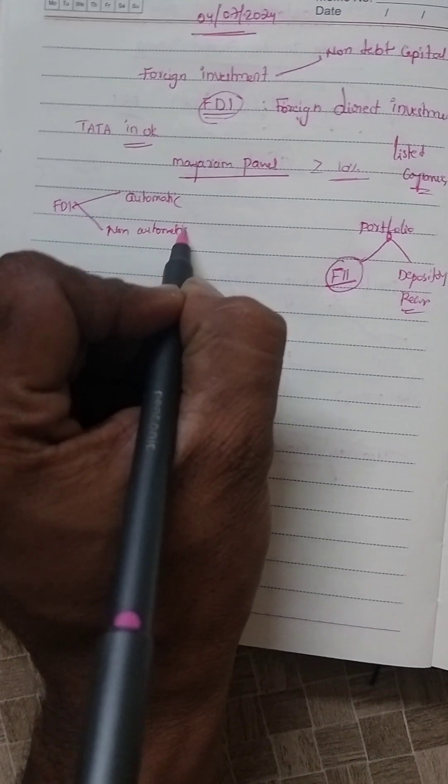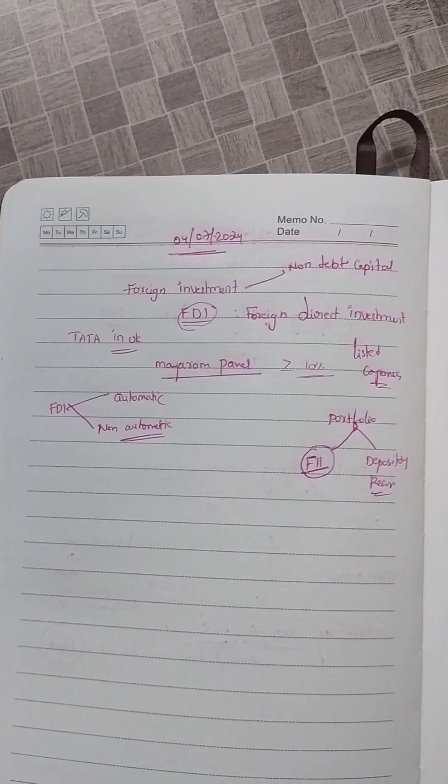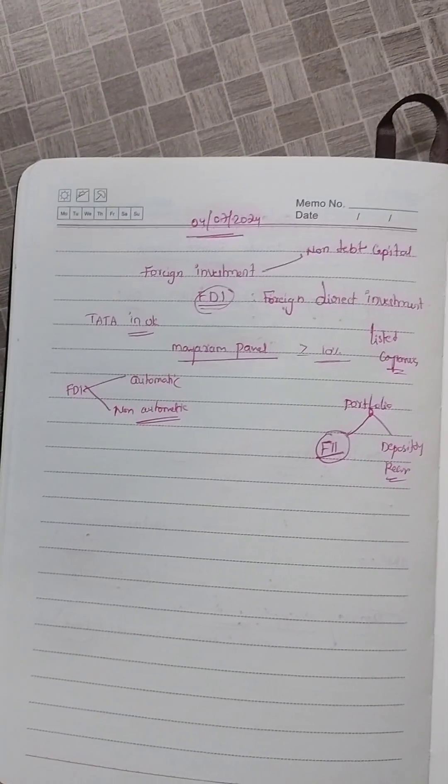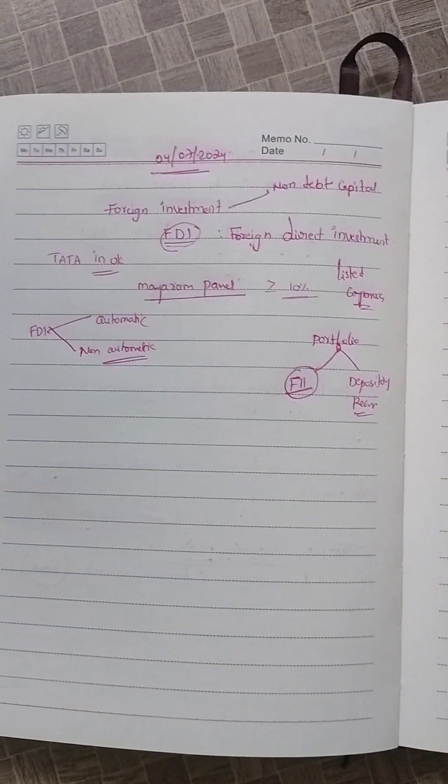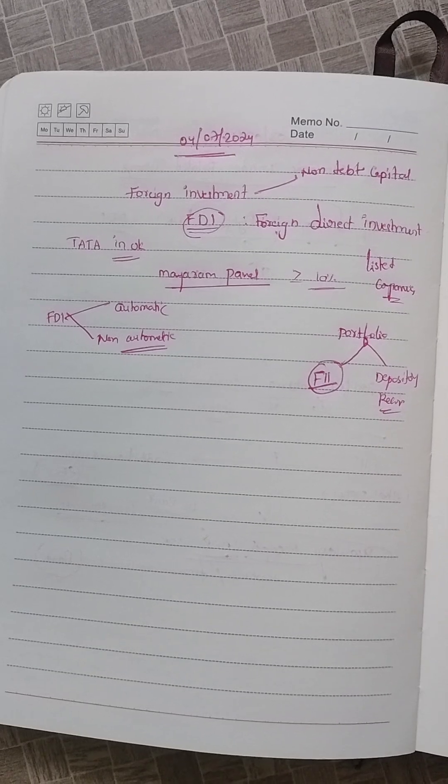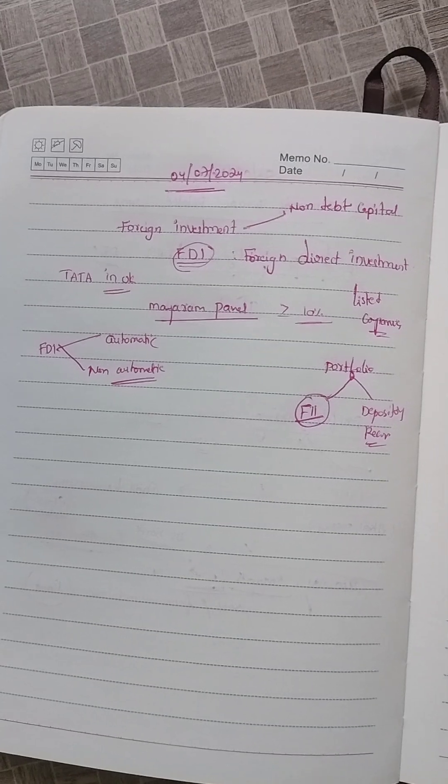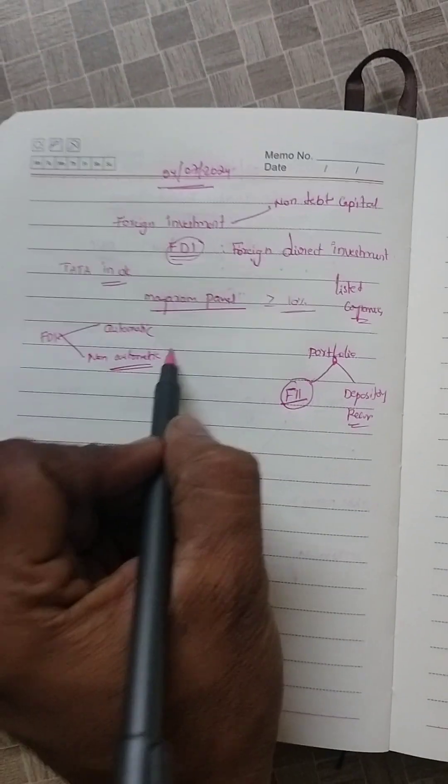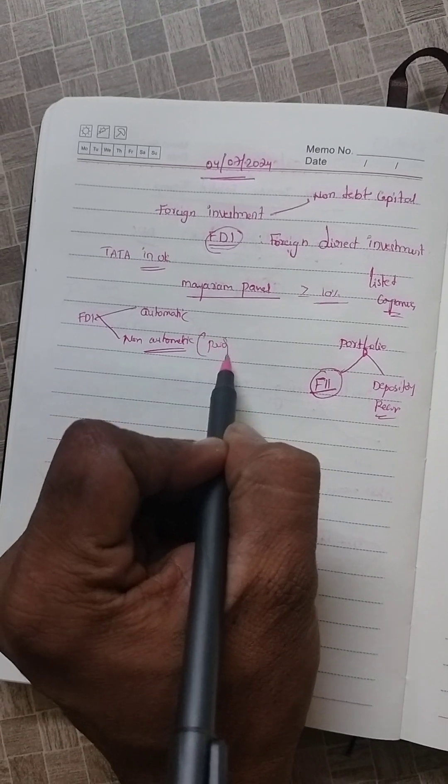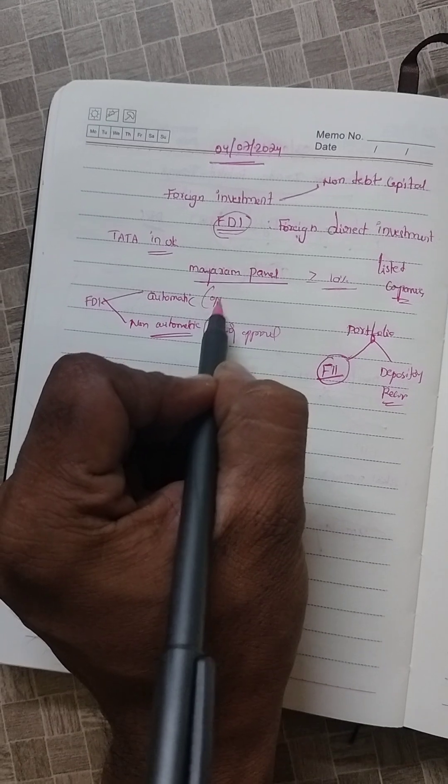They are giving good subsidies to other countries. Under automatic route, FDI is allowed without approval of government. Under non-automatic or government route, prior approval of government is required. Here, approval is not required for automatic route.